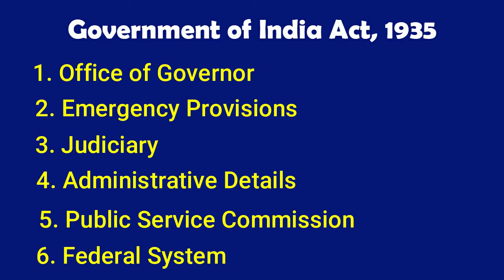The sixth feature is the Federal System. So, from the Government of India Act 1935, the six borrowed features are: Office of Governor, Emergency Provisions, Judiciary, Administrative Rules, Public Service Commission, and Federal System. I will tell you a shortcut to remember these.